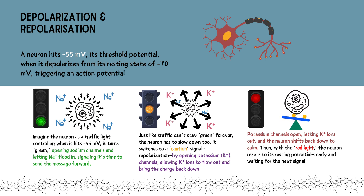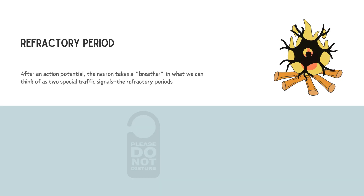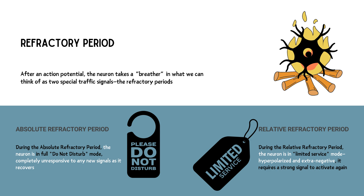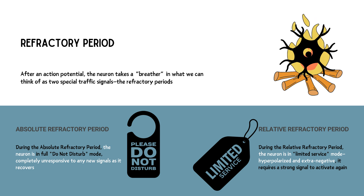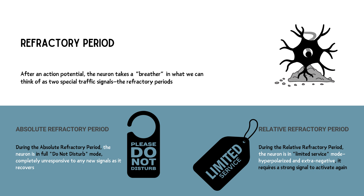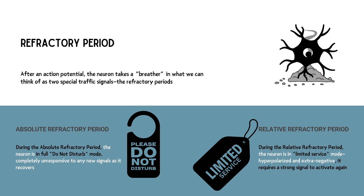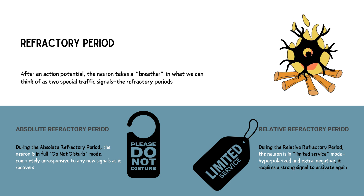Finally, it hits the red light, resetting the neuron to its resting potential — calm and fully prepared for the next signal. After an action potential, the neuron takes a breather in what we can think of as two special traffic signals: the refractory periods. First up, the absolute refractory period — the neuron's all-stop or solid red light. Right after firing, the neuron is completely closed for business, no signals allowed, just like when all cars stop to let pedestrians cross.